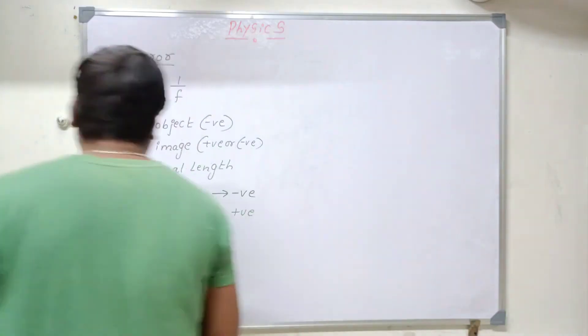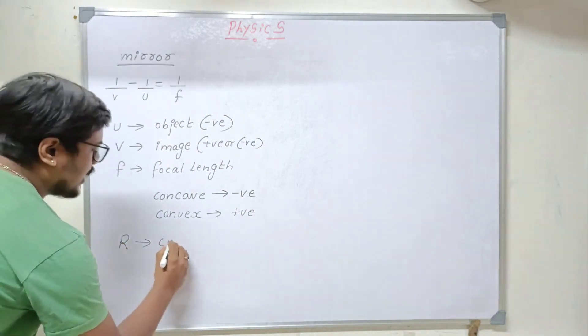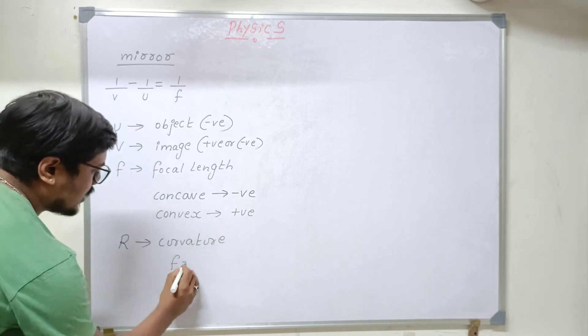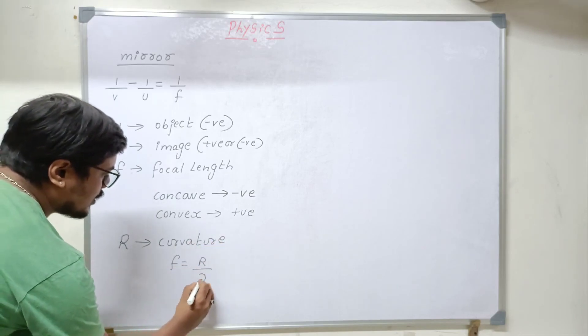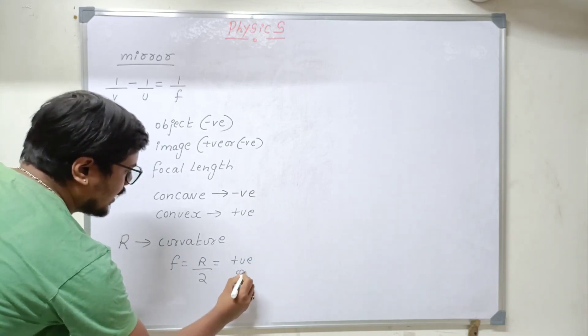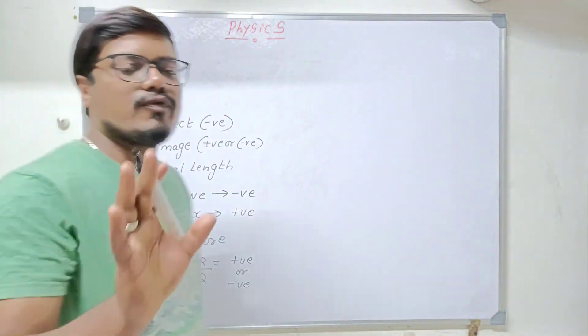Sometimes they will give radius of curvature in the question. Now how to find focal length? Focal length is nothing but radius of curvature by 2. You will get the values in positive or negative depending on the lens or the mirror. These are the terminologies you should know related to the formula of mirror.